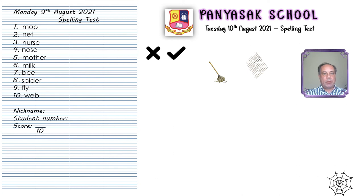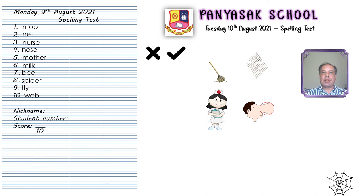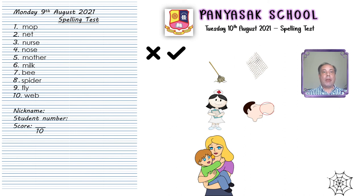Number three: NOSE, spelled N-O-S-E. Number four: NOSE, N-O-S-E. The fifth word was MOTHER. MOTHER is spelled M-O-T-H-E-R. MOTHER.